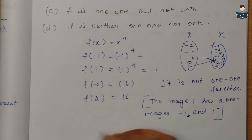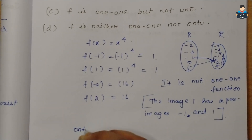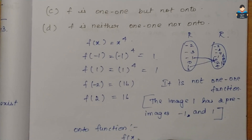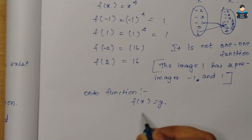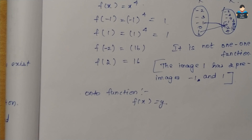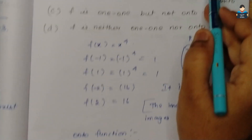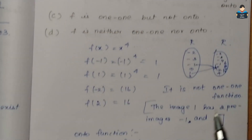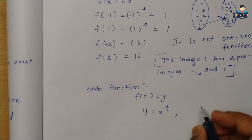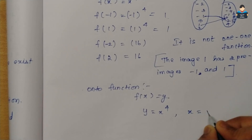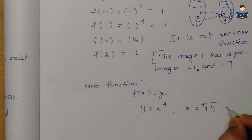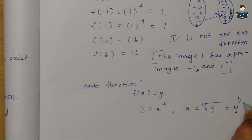Now checking the onto function for f(x) = x⁴. Setting f(x) = y, we get x⁴ = y, so x = y^(1/4), the 4th root of y.